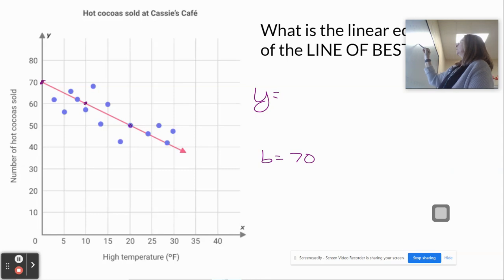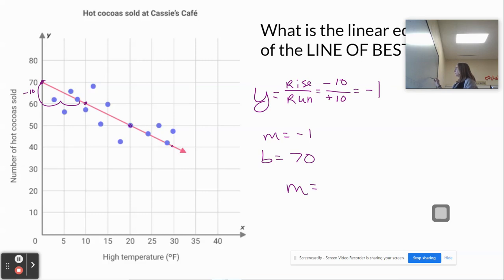And my perfect point. I'm coming down 10 and over. I've got to look at my scale. This is going by fives. So my rise is negative 10. My run is 5, 10 is positive 10. So my slope is 1, negative 1. So when I put it together, my equation is y equals negative 1x plus 70.